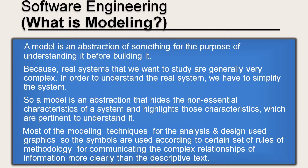What is modeling? A model is an abstraction of something for the purpose of understanding it before building it, because real systems that we want to study are generally very complex. In order to understand the real system, we have to simplify the system. So a model is an abstraction that hides the non-essential characteristics of the system and highlights those characteristics which are pertinent to understand it. Most of the modeling techniques for analysis and design use graphics, and symbols are used according to certain rules of methodology for communicating complex relationships more clearly than descriptive text.